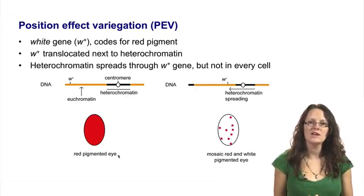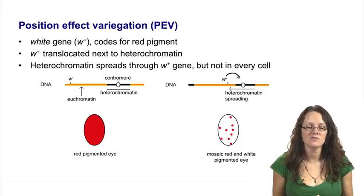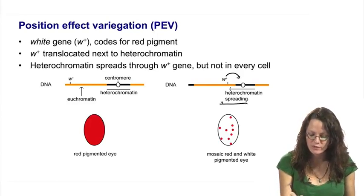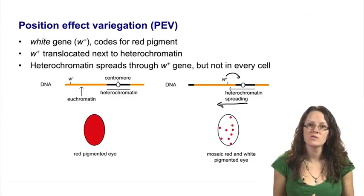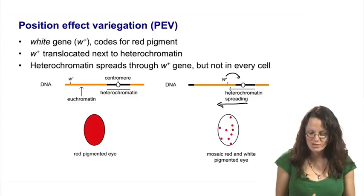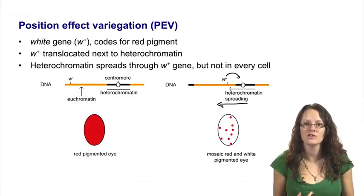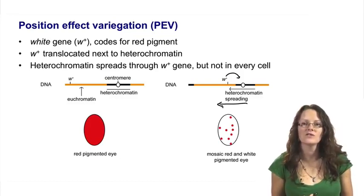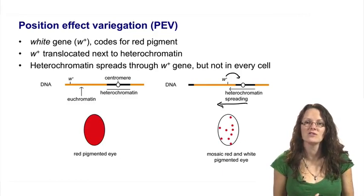Sometimes the white gene is translocated due to a DNA rearrangement and becomes located close to the heterochromatin found at the centromere. When translocated in this way, the heterochromatin at the centromere can spread out to sometimes encapsulate and cover the white gene. If the heterochromatin spreads through the white gene, it is silenced and white pigment is produced rather than red. This spreading is not completely efficient and doesn't happen in every cell the same way, so what ends up happening in the fly eye is a variegated expression — little dots of red within an otherwise white eye.